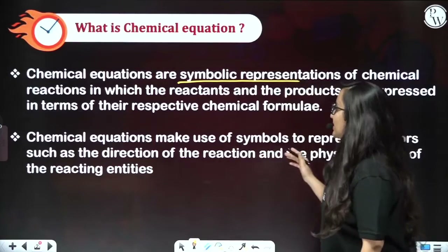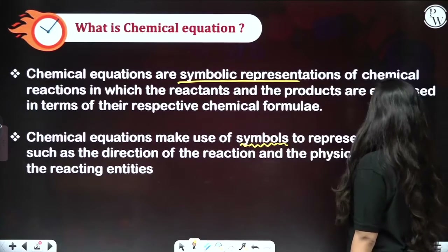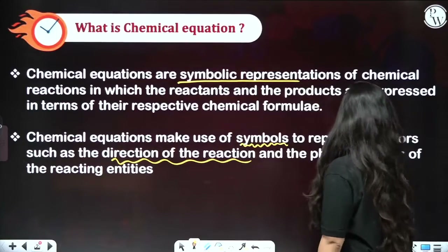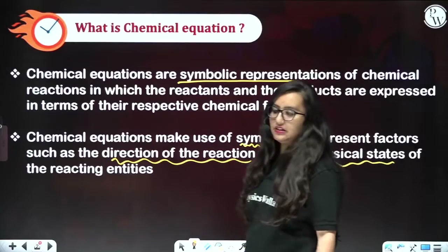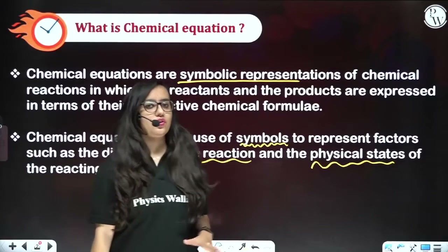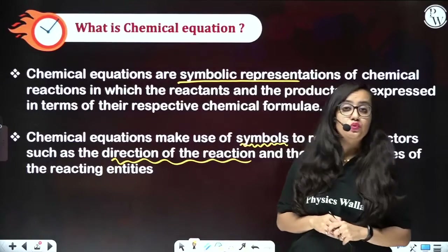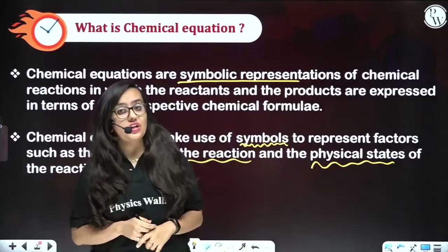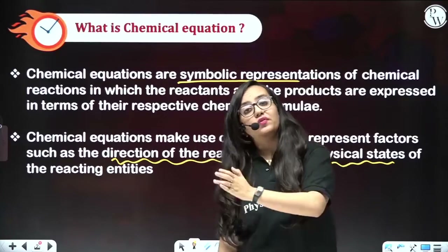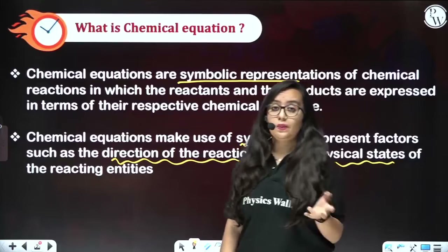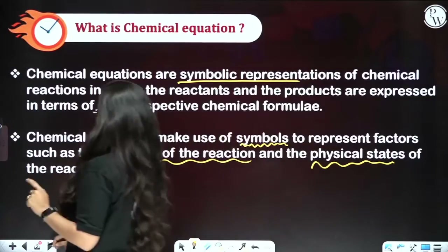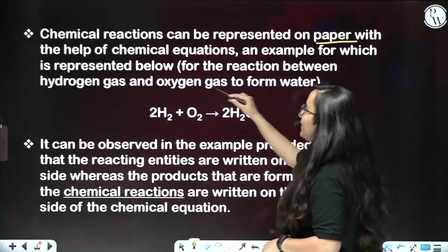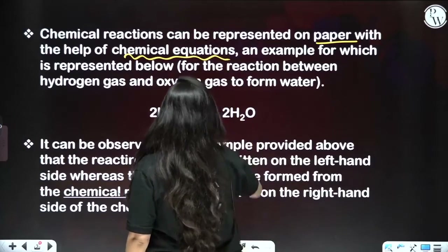Chemical equations make use of symbols to represent factors such as the direction of the reaction and the physical states of reacting entities. It gives information about the physical states of substances and the direction of the reaction — whether the reaction is going in the forward direction or the reverse direction. Chemical reactions can be represented on paper with the help of chemical equations.